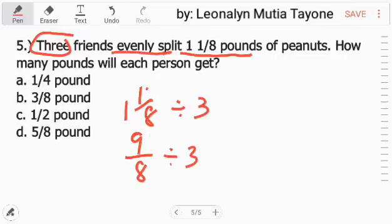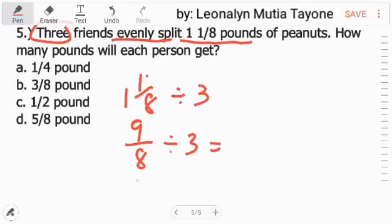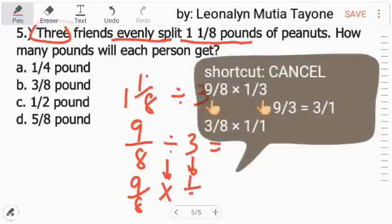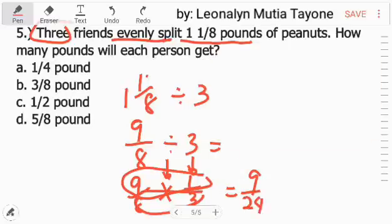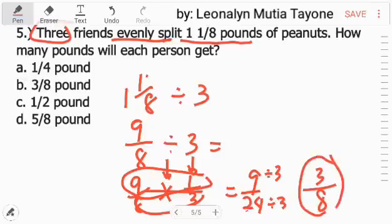Divided by 3. Since this is division, this 9 over 8, just copy 9 over 8. So division becomes multiplication and the reciprocal of 3 is 1 over 3. So we can multiply this. 9 times 1 equals 9. 8 times 3 equals 24. So 9 over 24, we can simplify that by finding the greatest common factor. Their greatest common factor is 3. So 9 divided by 3 equals 3. 24 divided by 3 equals 8. So the answer is 3 over 8 pounds.